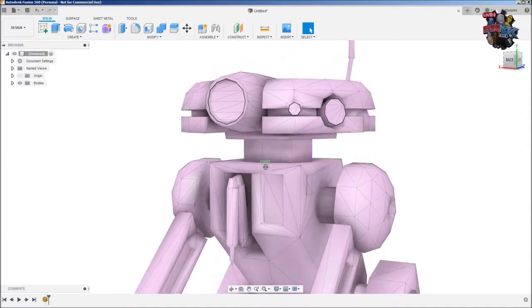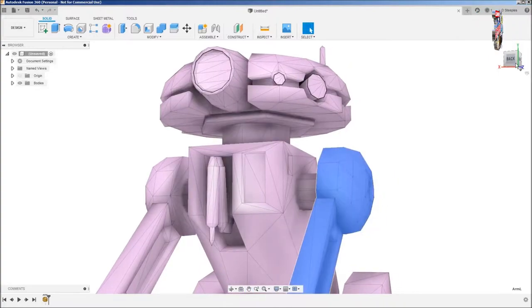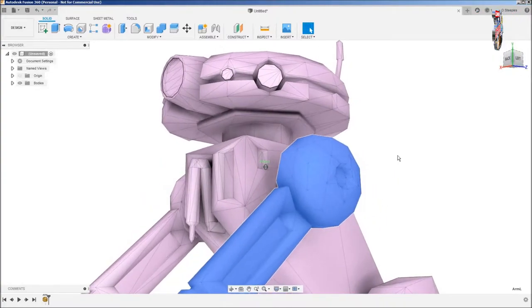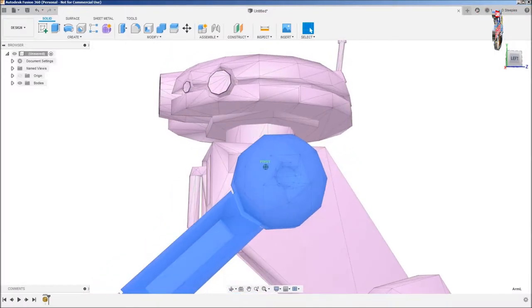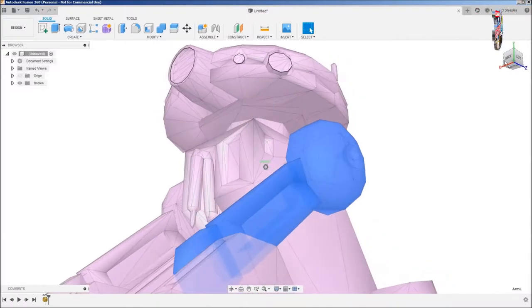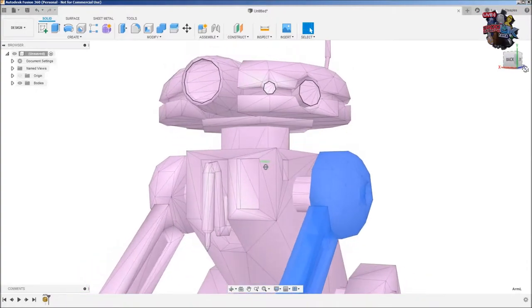However when you actually look at these shoulders for example you can see these are obviously rounded and not supposed to be lots of polygons.